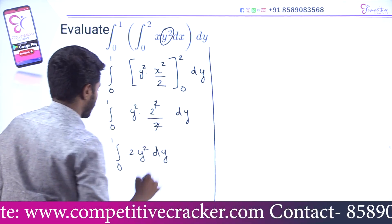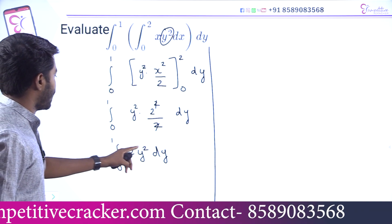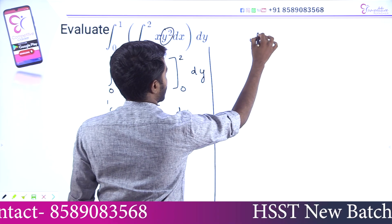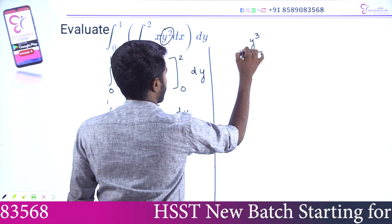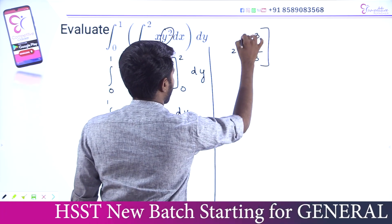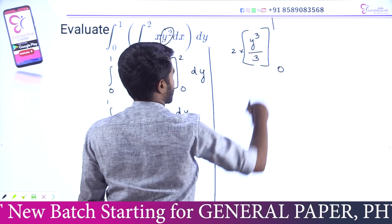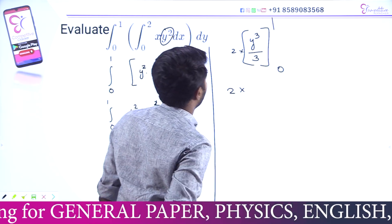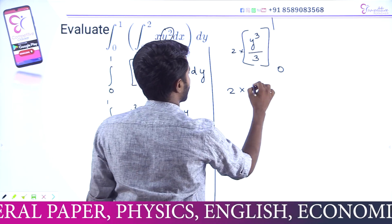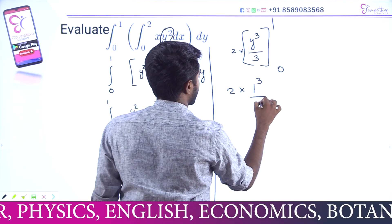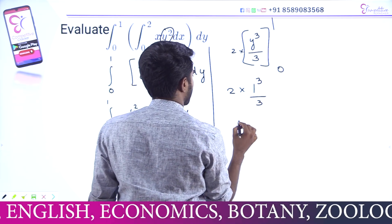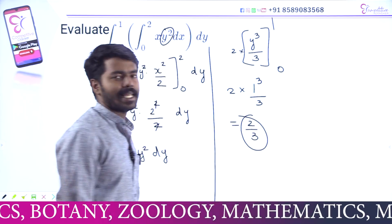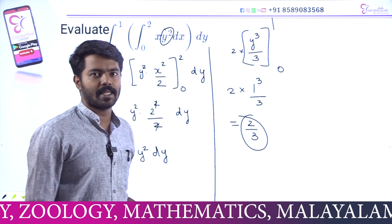Simple. That is integral 0 to 1, 2y² dy. Integrating gives 2y³ by 3, and so we get 2 by 3 as our result.